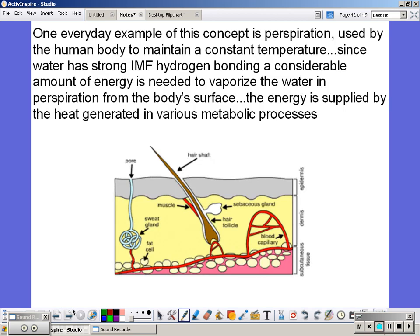So one everyday example of heat of vaporization is the concept of perspiration. It's used by the human body to maintain a constant temperature. Since water has strong intermolecular forces, hydrogen bonding is needing a considerable amount of energy to vaporize the water from your sweat. The energy is supplied by the heat generated in various metabolic processes. So when you exercise, the heat that's building up internally is being regulated by sweating. So when we sweat, the water absorbs the heat from our body. So our body is kept at a constant temperature.